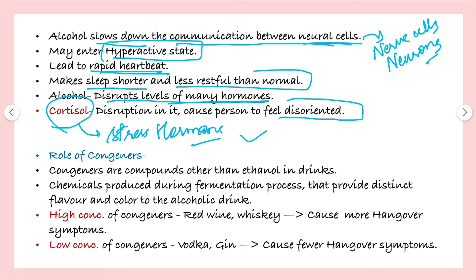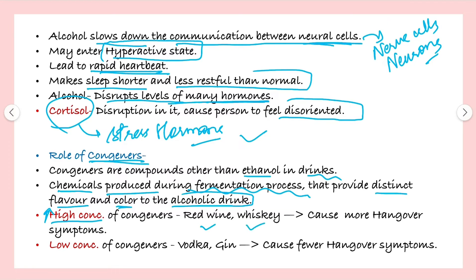There are some compounds other than ethanol present in drinks — these are congeners. Congeners are chemicals produced during the fermentation process, and they provide a distinct flavor and color to alcoholic drinks. If the concentration of congeners is high, for example in red wine and whisky, they will cause more hangover symptoms. If the concentration is low, for example in vodka and gin, they will cause fewer hangover symptoms.